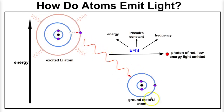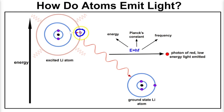Here we have a ground state lithium atom and an excited state lithium atom. If we pay close attention, the valence electron in the excited state lithium atom has jumped to a higher energy level — the third energy level. This is exactly what happens when atoms get excited: their electrons jump up to higher energy levels.